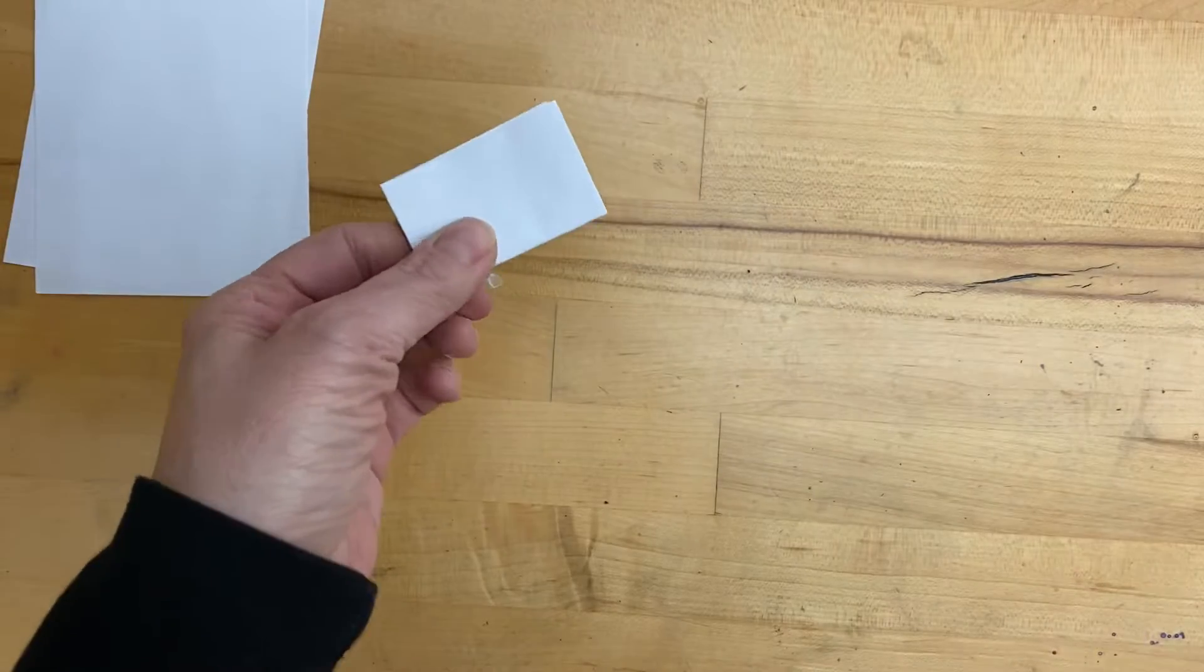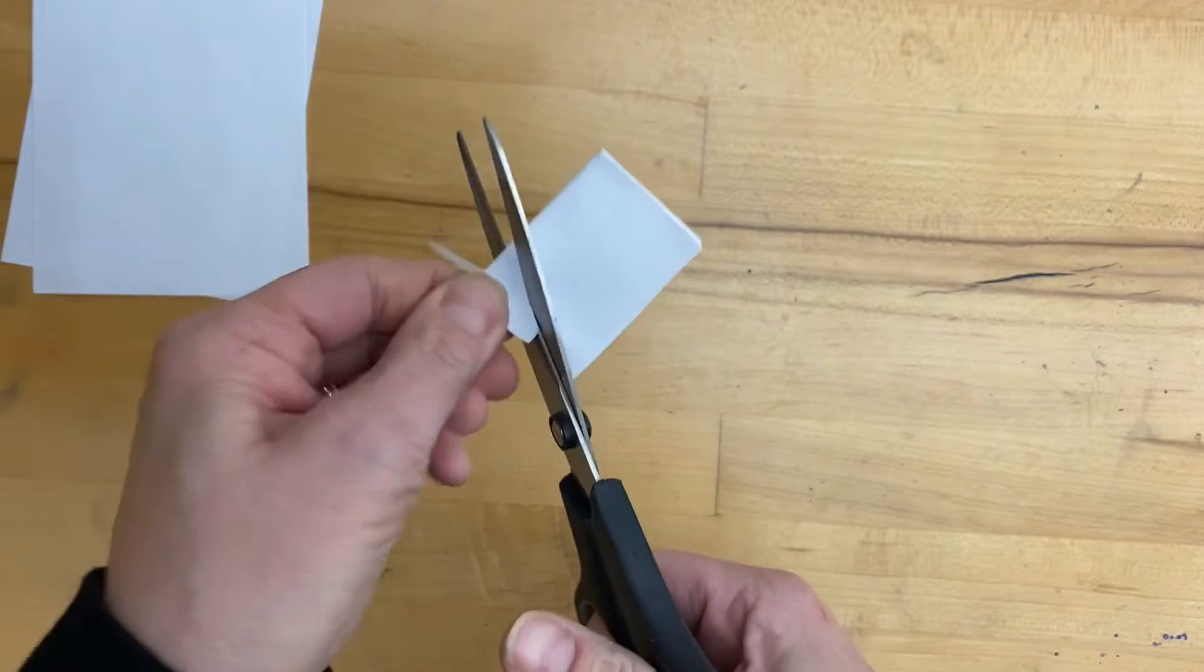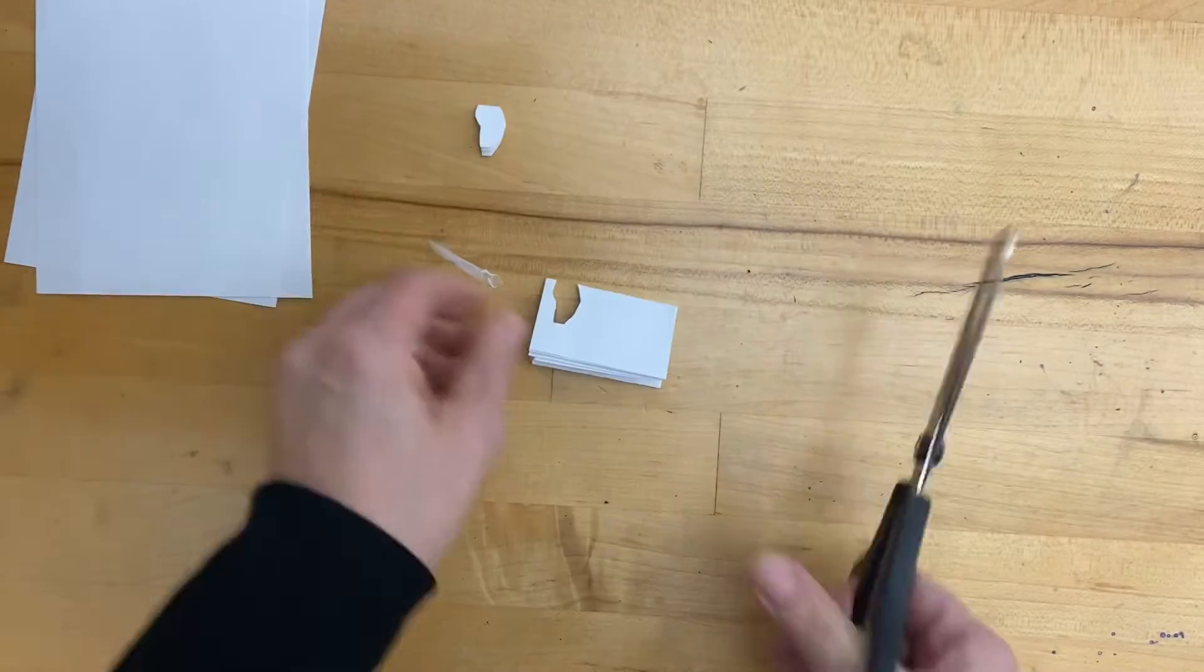So now we're just gonna take our scissors and start cutting some of those shapes that we would like to have out of the snowflake.